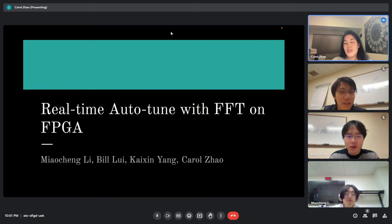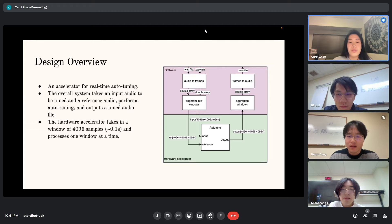Hi everyone, for the final project of high-level design automation, our team built a real-time auto-tuning system with fast Fourier transform on FPGA. This is an overview of the entire auto-tuning system. The overall system takes in two audio files in wave format, performs auto-tuning, and outputs another file. The software converts between wave format and amplitude frames and divides the frames into windows before sending them to the hardware.